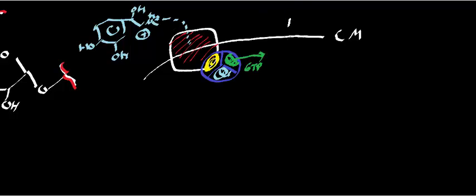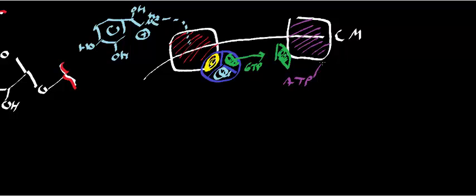And so over here we have an enzyme, and this enzyme is called adenylyl cyclase. When the alpha subunit associates with adenylyl cyclase, this enzyme becomes activated, and it converts ATP into cyclic AMP.